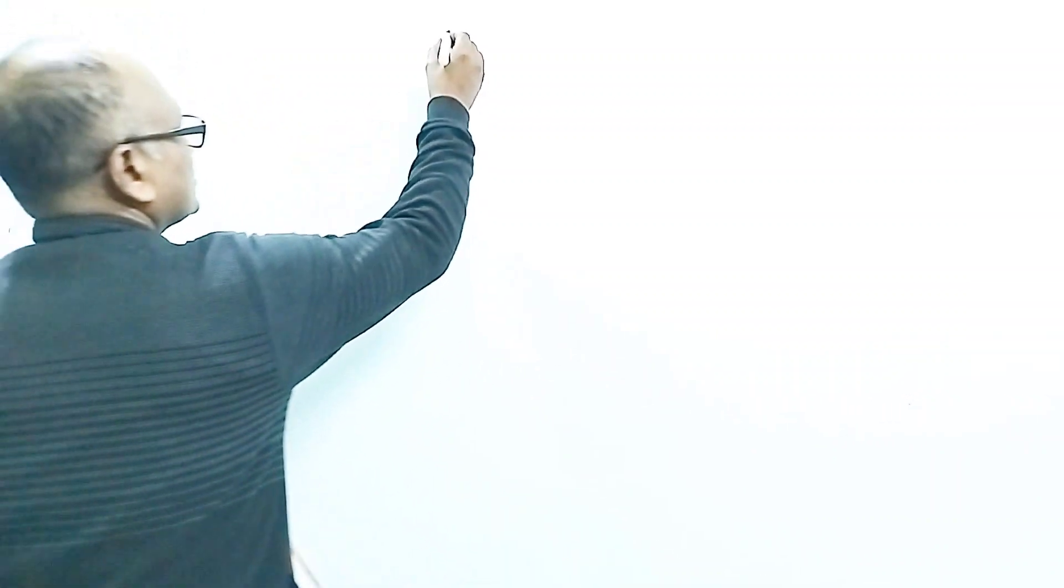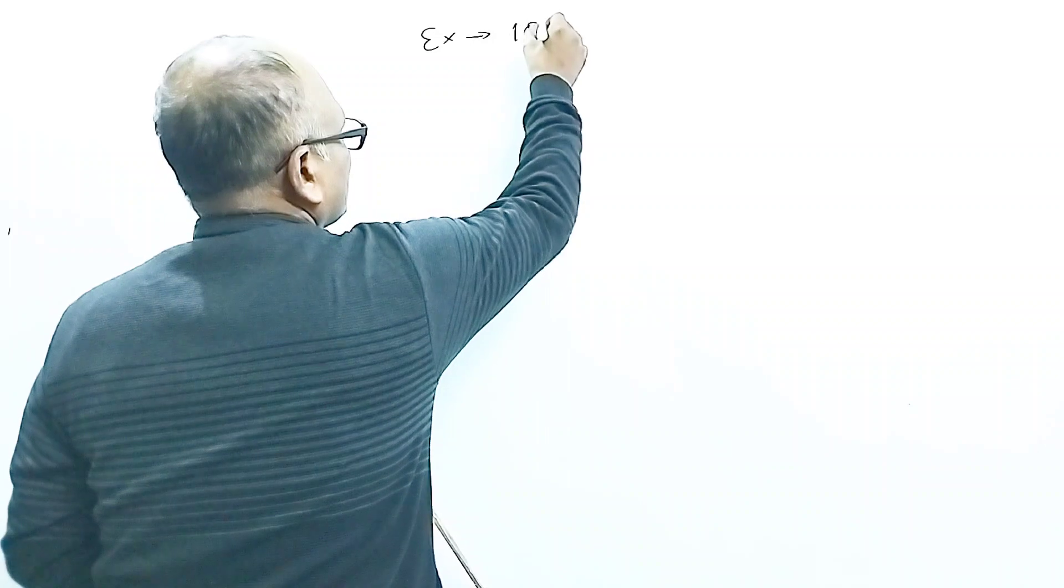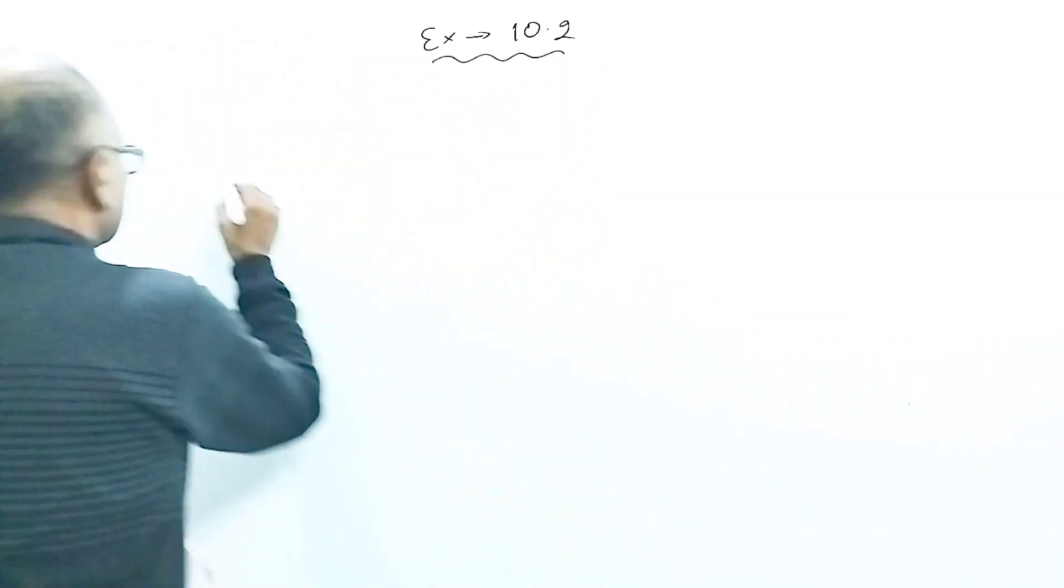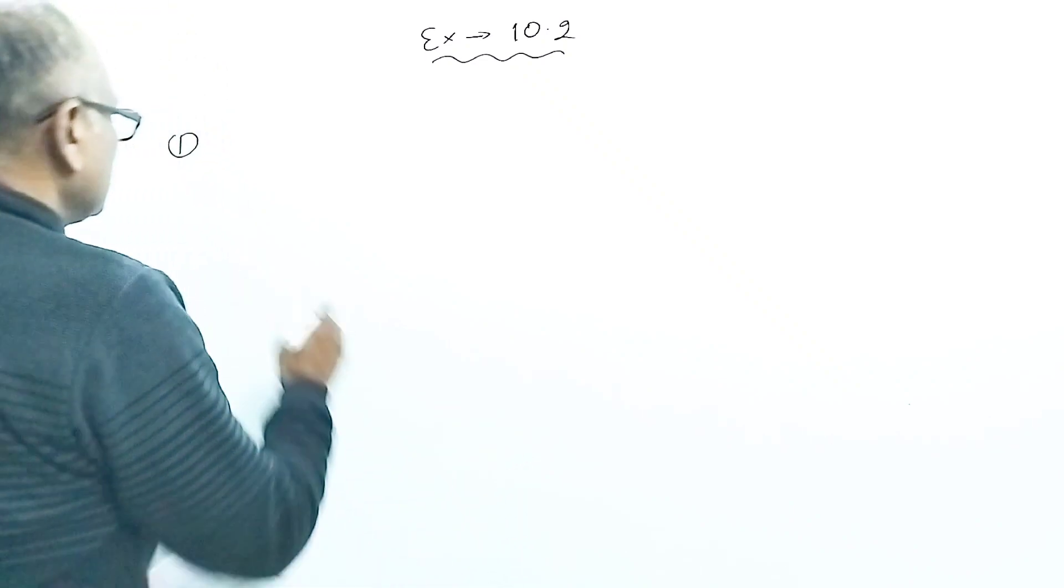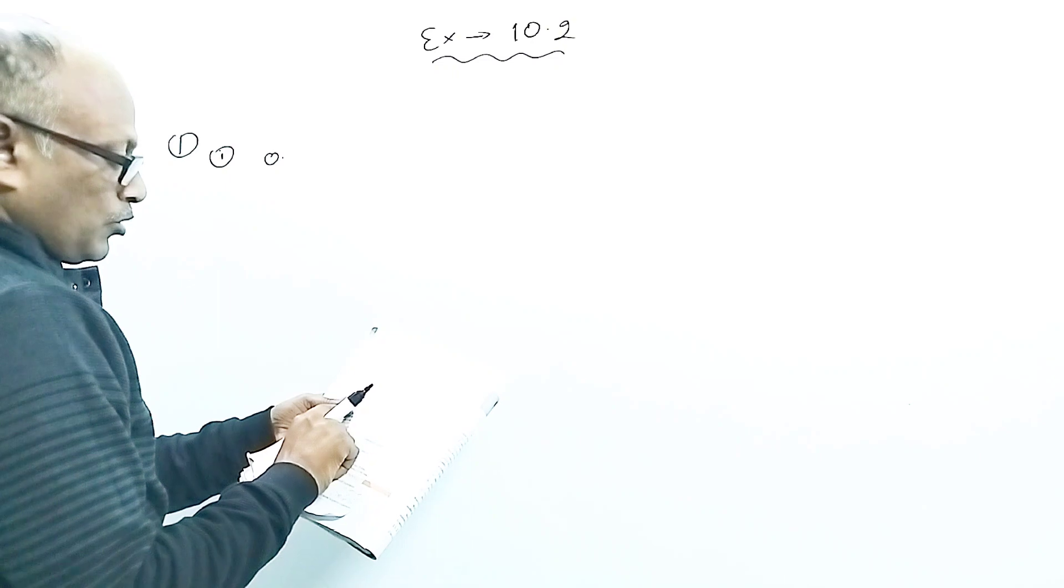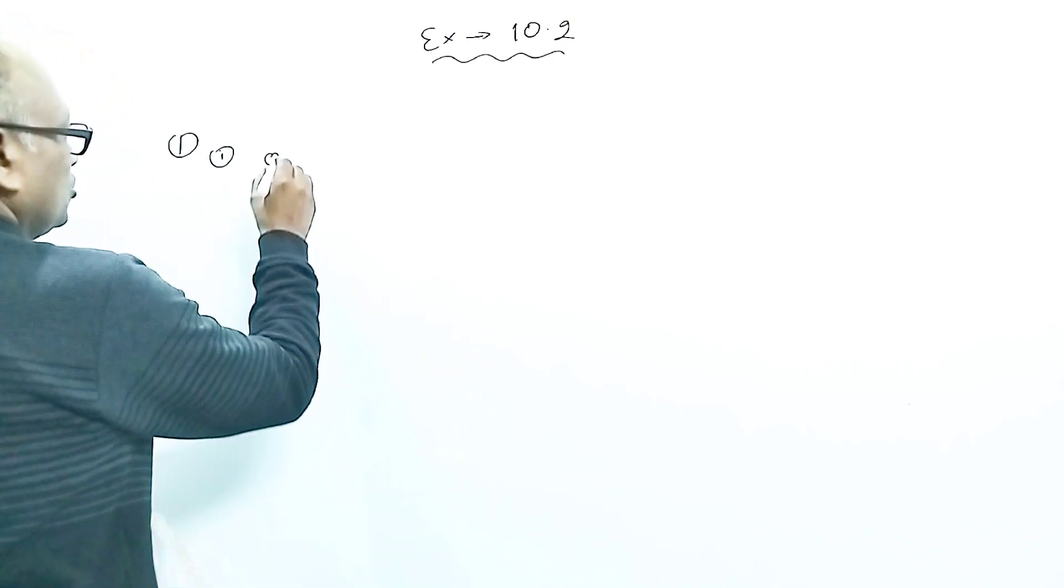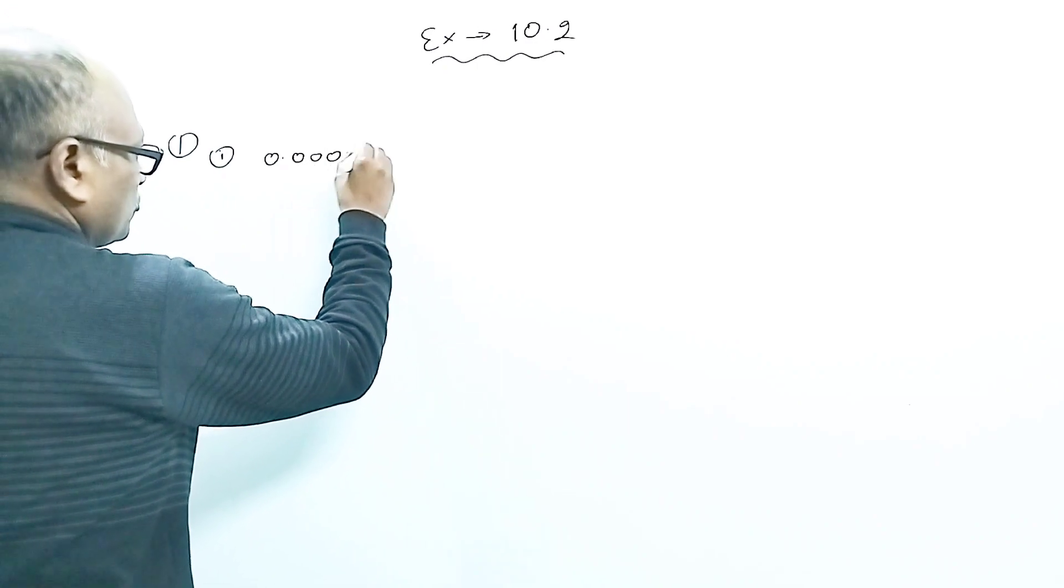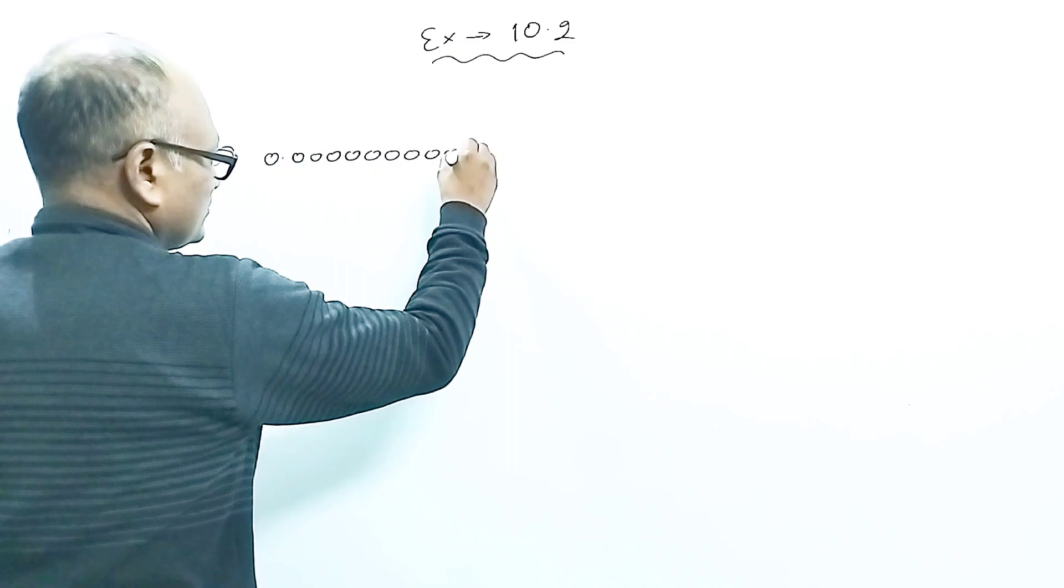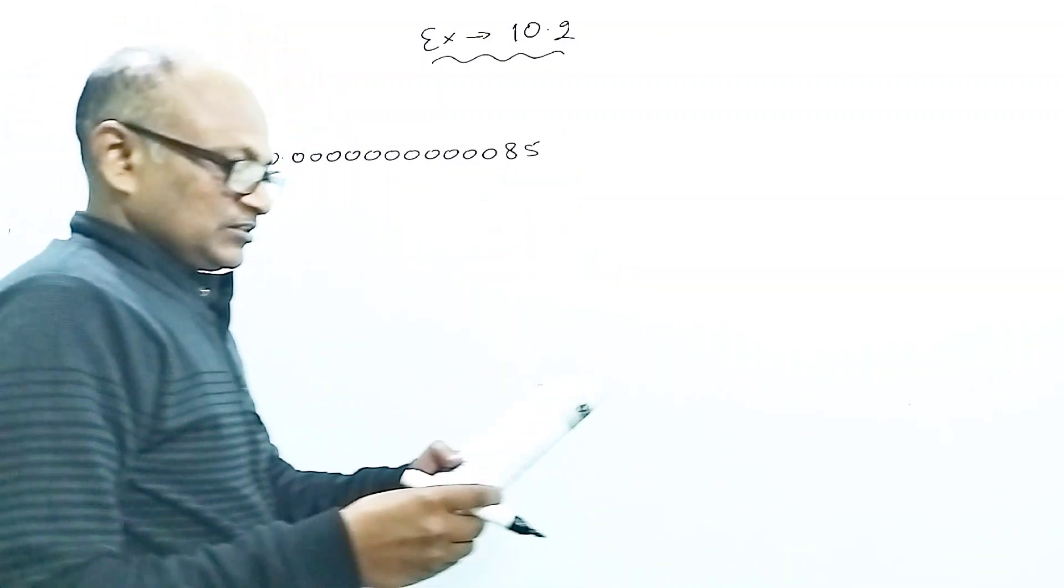So first question that means it is exercise which one? 10.2. This is the exercise question number first. And in the first part is zero point how many zeros are there? 1, 2, 3, 4, 5, 6, 7, 8, 9, 10, 11. After that there is 8 5. Now I have to convert this in the standard form.